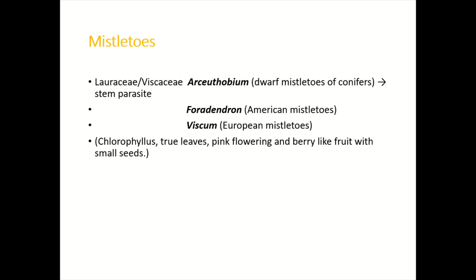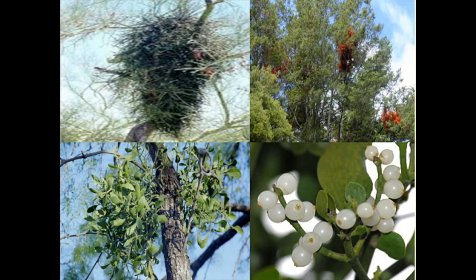Mistletoes have chlorophyll, but for minerals and water they are dependent on the host plants, making them partial stem parasites. They have pink flowers and berry-like fruits with small seeds. Here you can see examples — a mistletoe plant with pink flowers and white fruits.